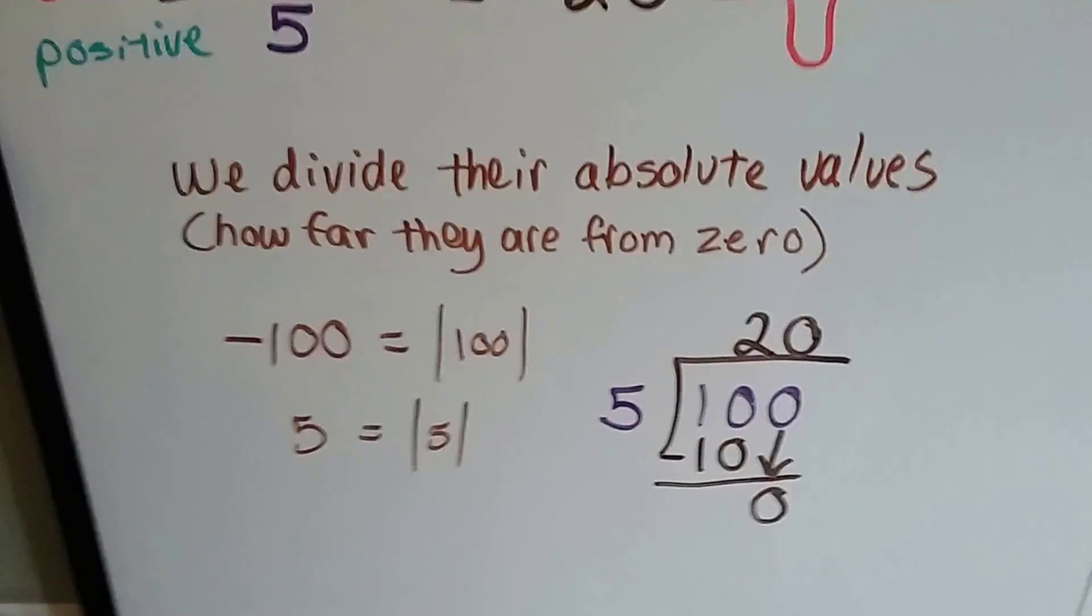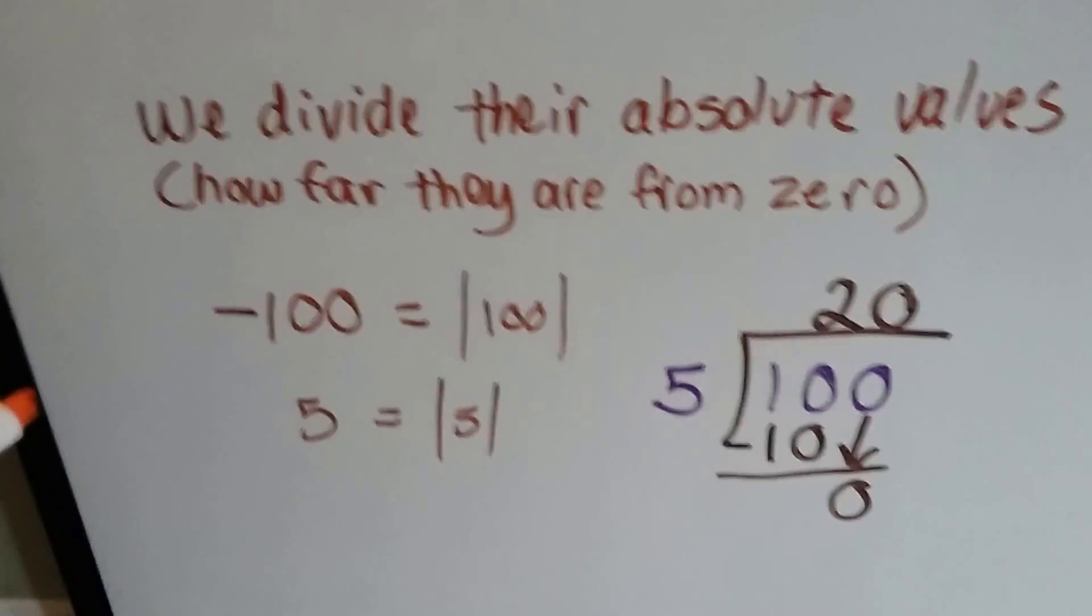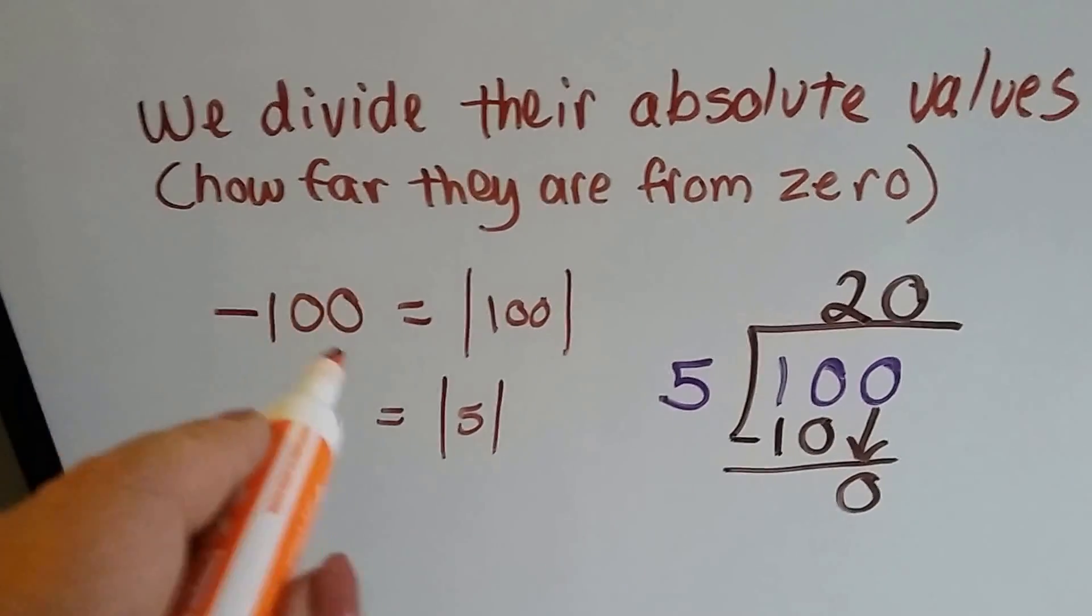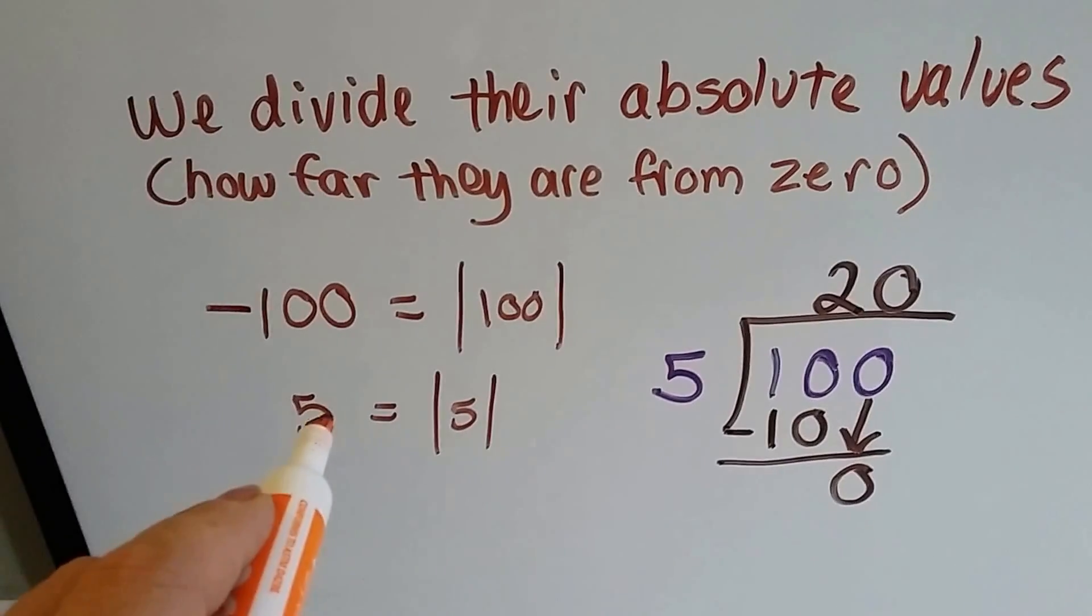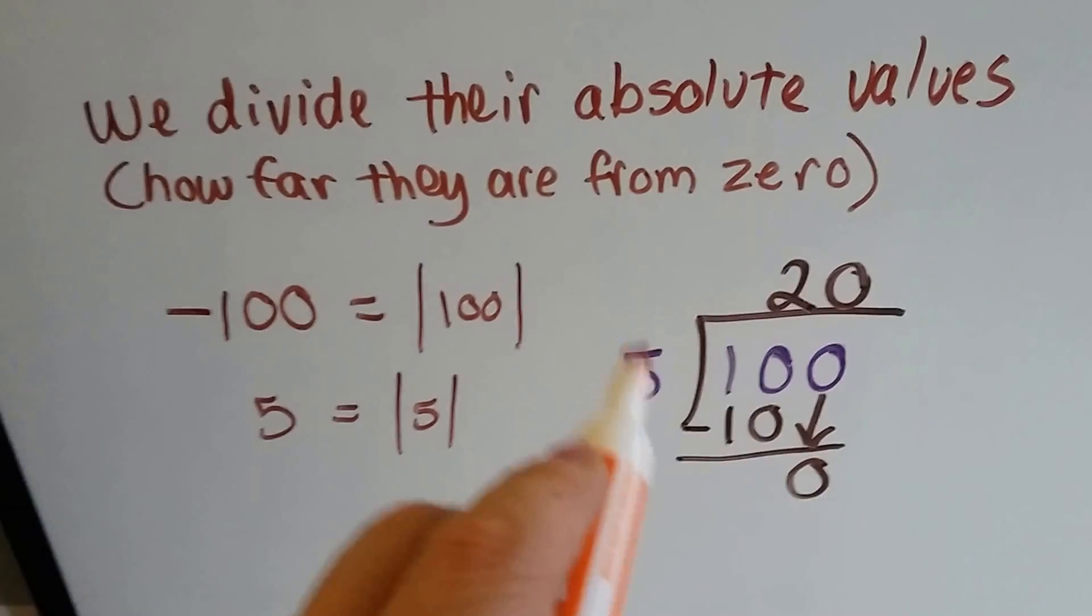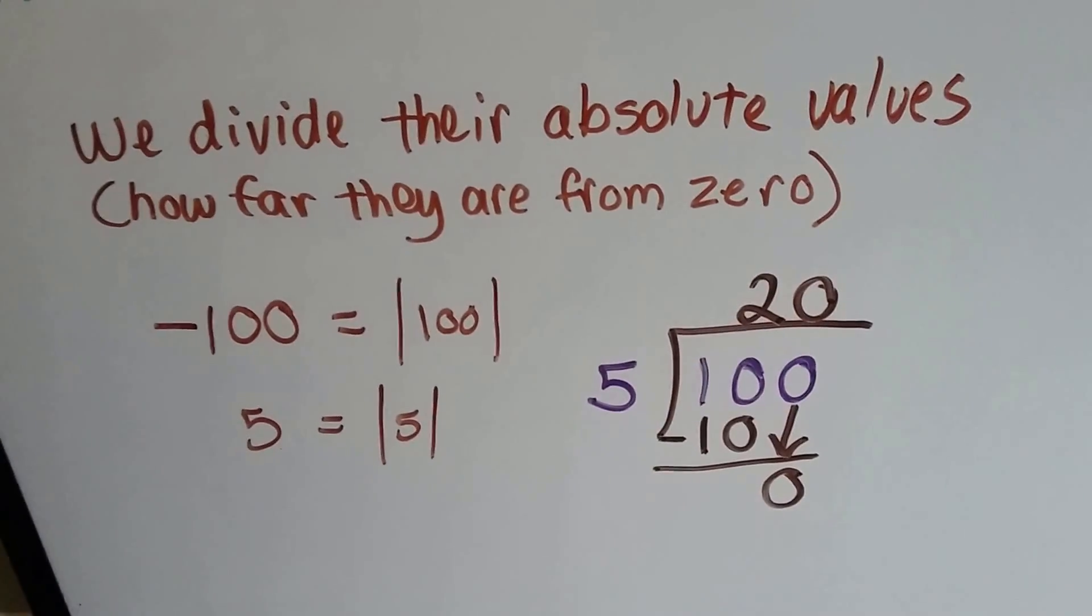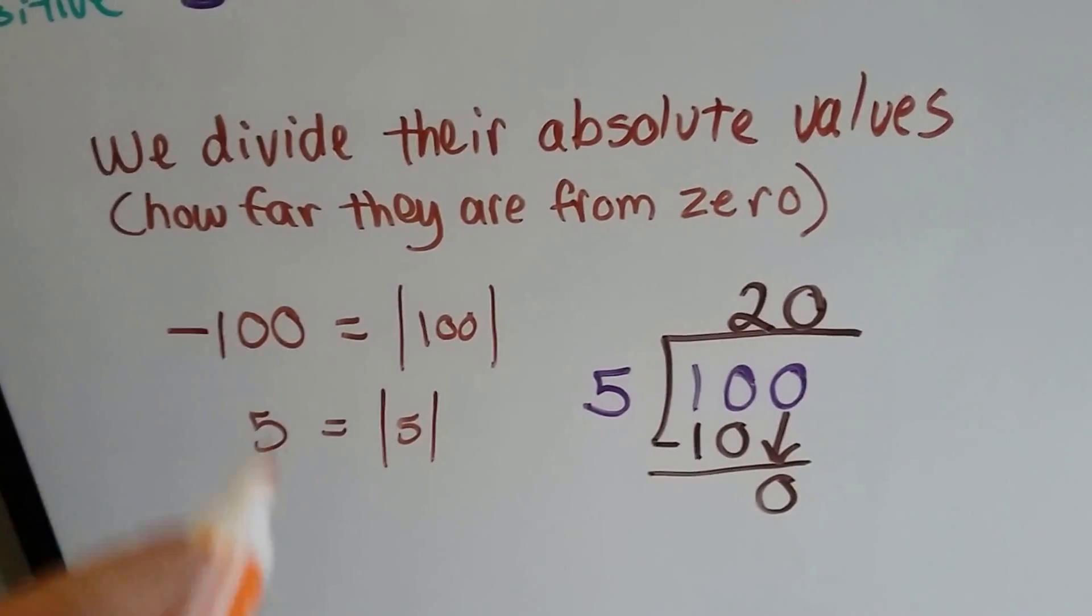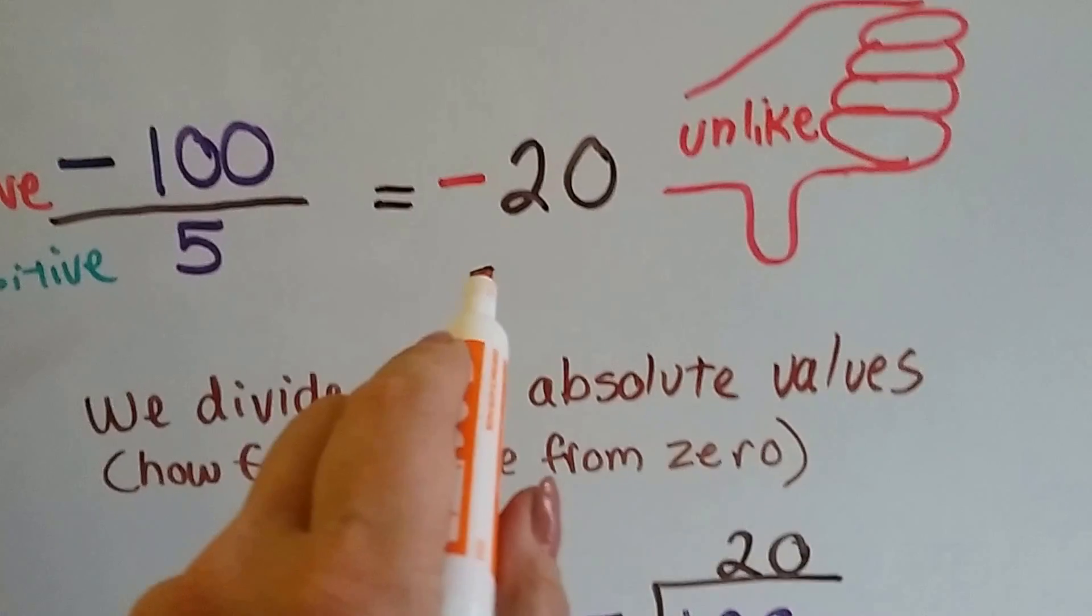We divide their absolute values, that's how far they are from zero. Negative 100's absolute value is 100, and 5's absolute value is 5. Five goes into 100 twenty times. Because they have unlike signs, it's a negative 20.